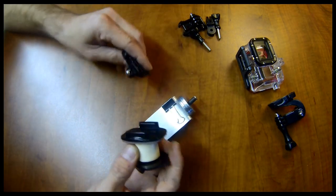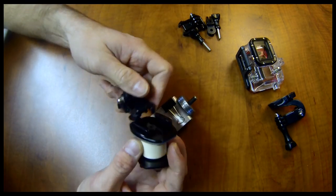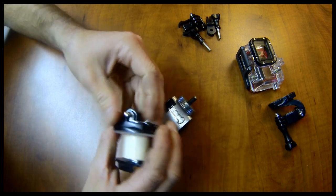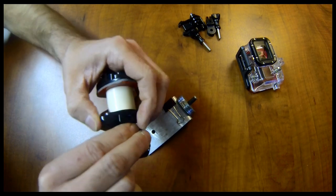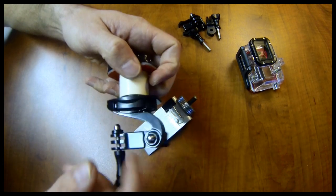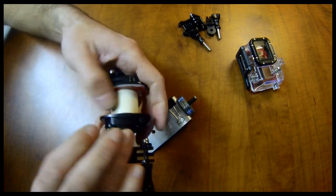On this side you can install your mounts for attaching it to your surface. And then on the other side you would install the mount for the camera. That's the basic swivel rig.